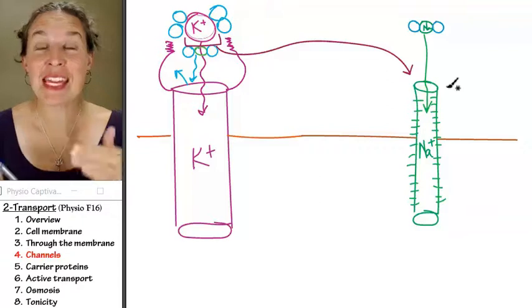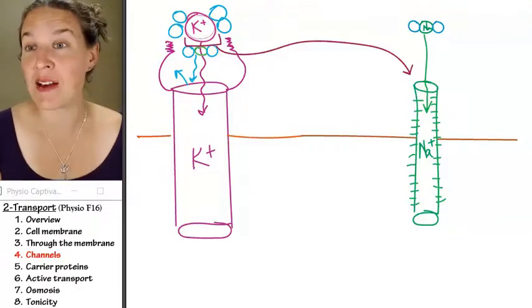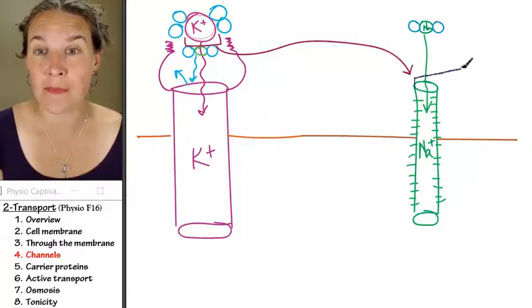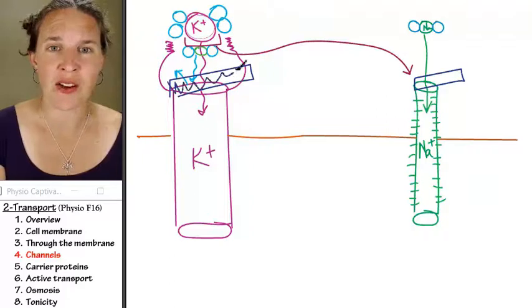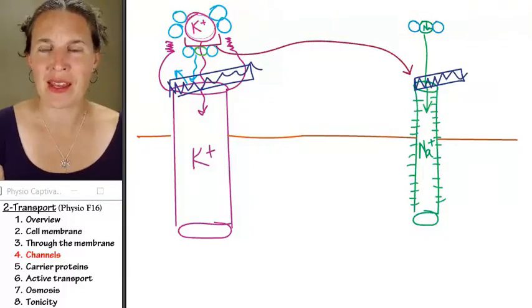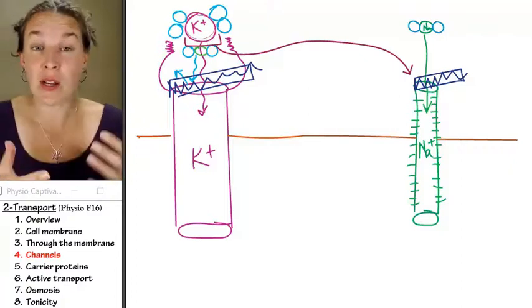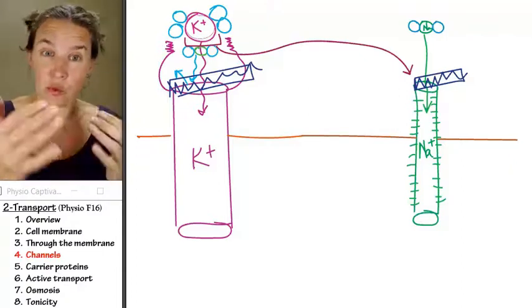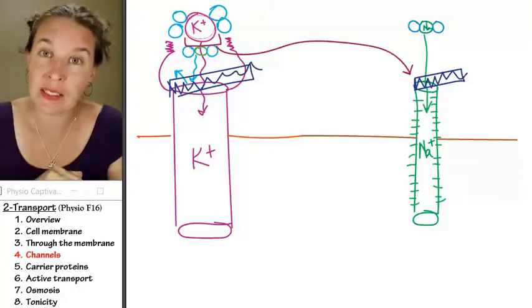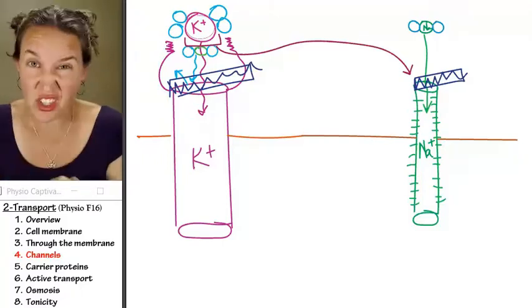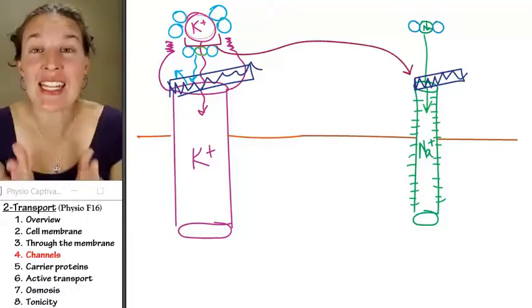Channels can be gated. So both of these channels can actually have doors on them. And you can imagine that if I had a big old gate on my channel, I don't care how big the tractor beam of negative charge pull is. I don't care how great the water molecules are being scraped off. If there's a lid on the tunnel, you're not going through.